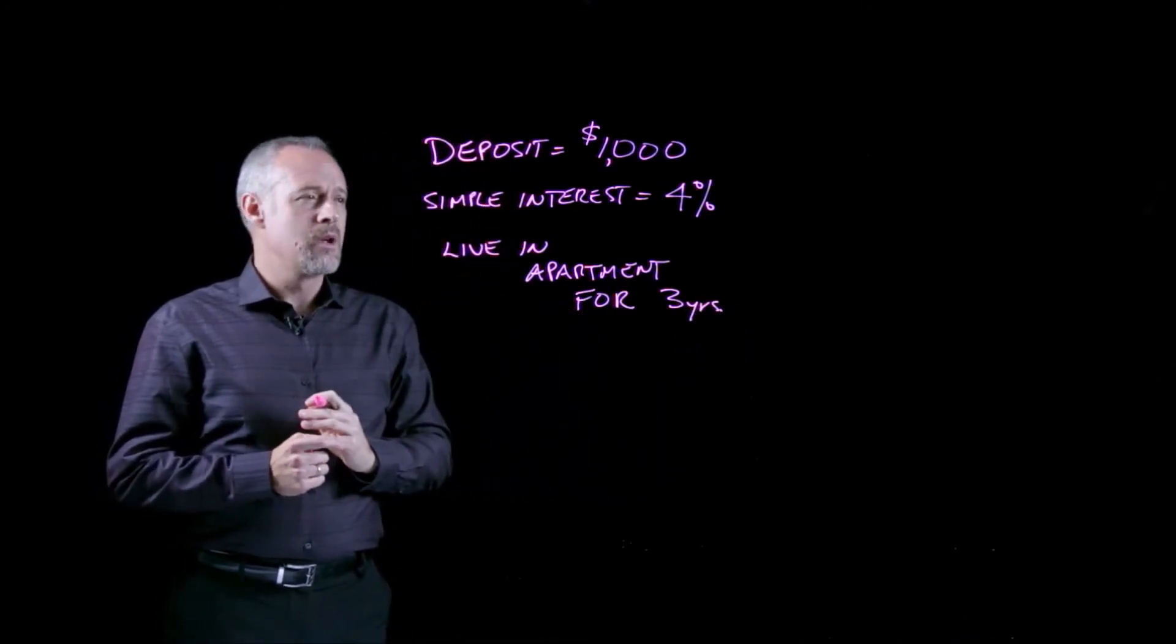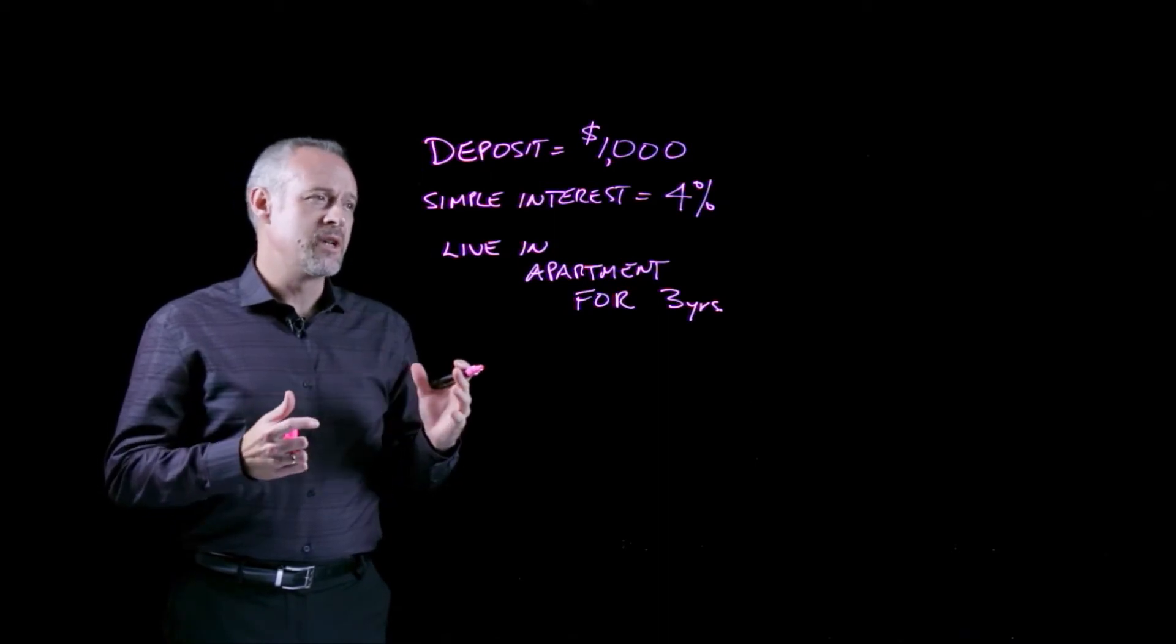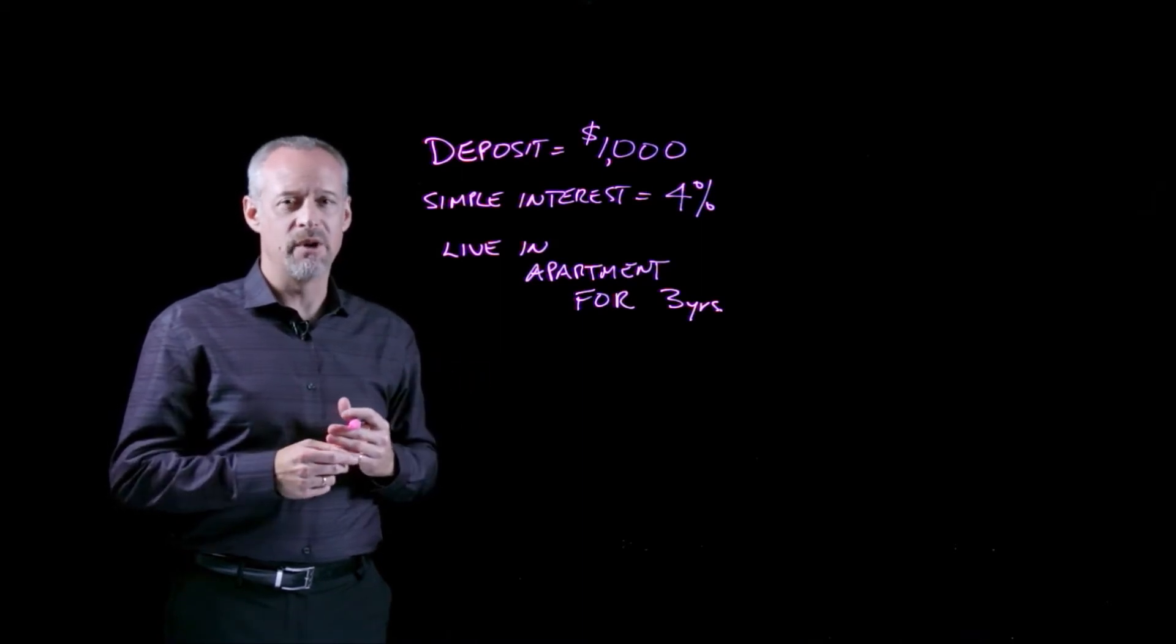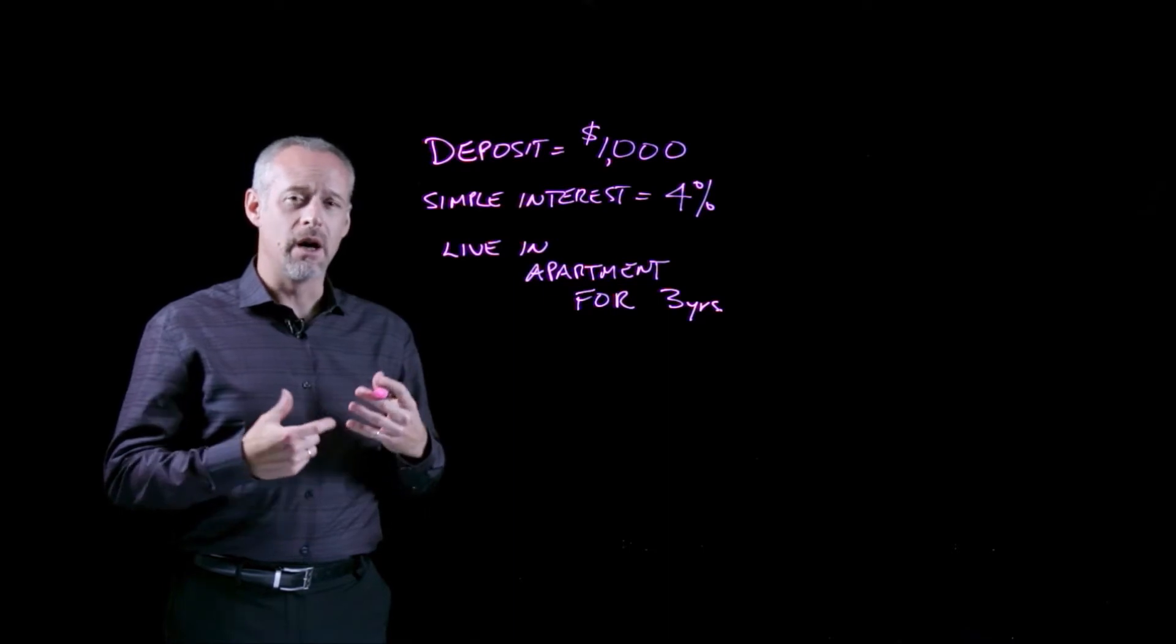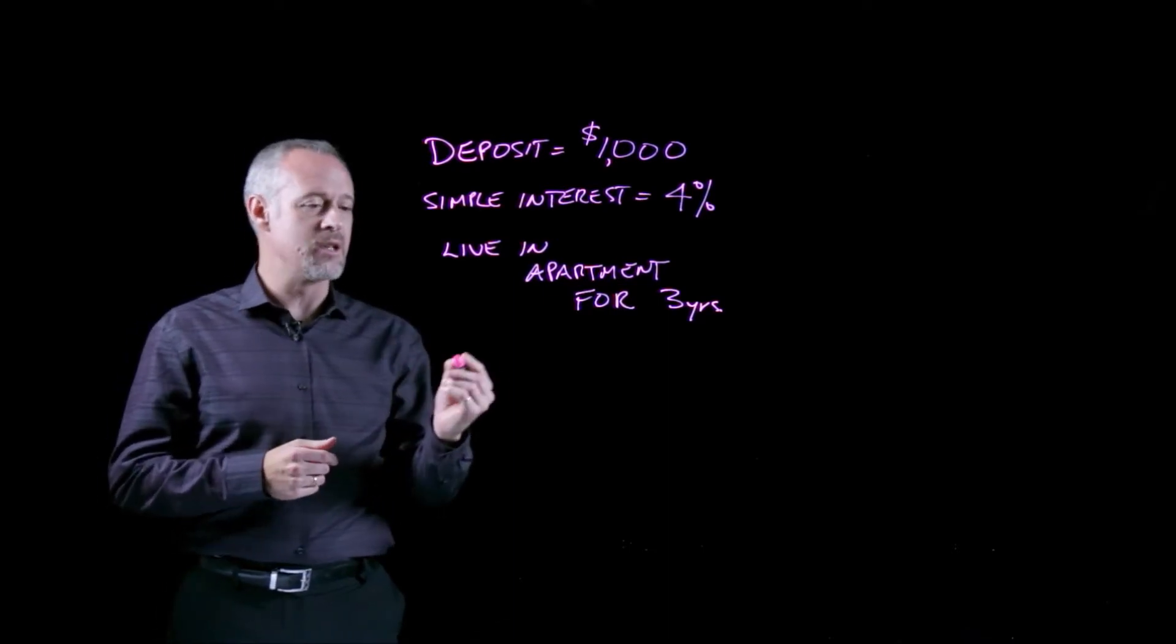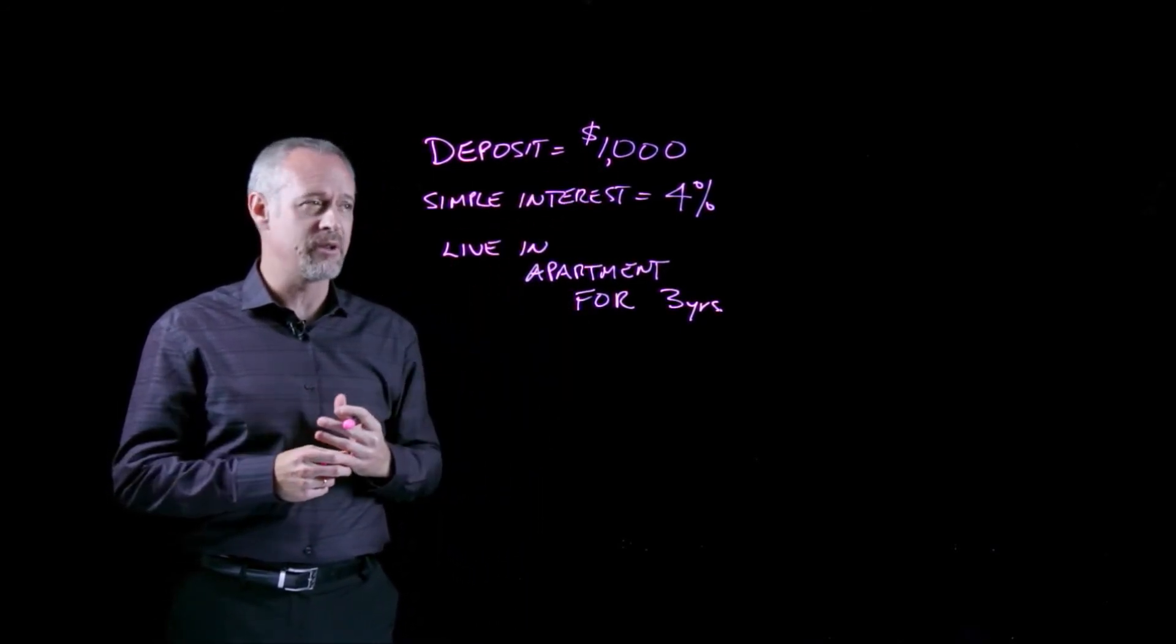Pretty simple problem. In calculating simple interest, very straightforward calculation. We use some of the same terminology that we use in other time value of money problems. So for instance, an amount of money that occurs at time t equal to zero, we'll call P. So in this problem, the $1,000 is the P, or the present value.